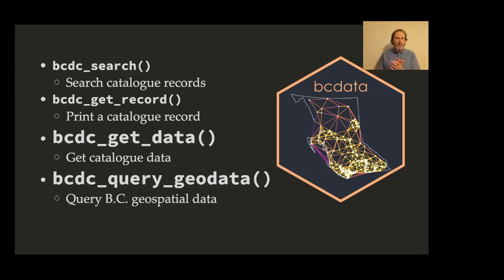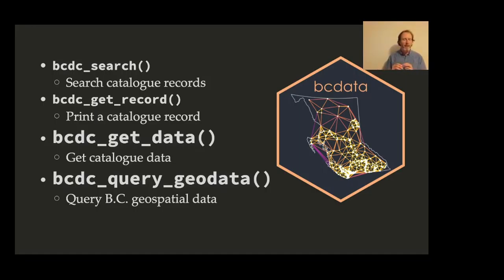All the functions of BCData are preceded by a bcdc_ prefix to facilitate autocompletion. There's a search function and a get record function for querying and searching metadata. Today I want to focus on getting data and how that can enable a reproducible workflow — most specifically about spatial data.